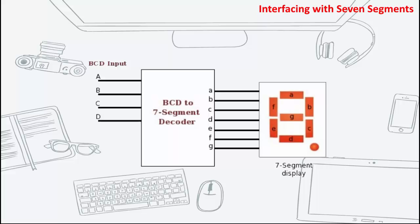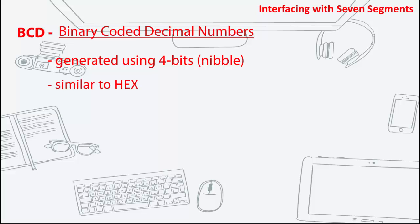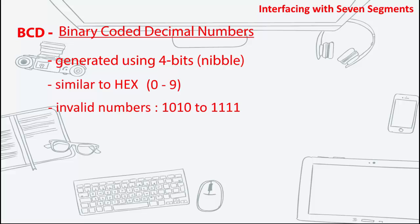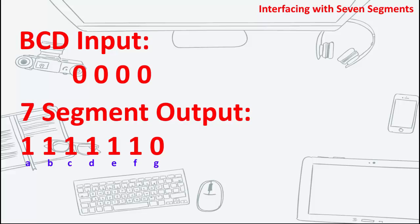Unlike the common anode or common cathode display, the process of displaying characters on a BCD to 7-segment display is different. It uses BCD (binary coded decimal) numbers to display specific numbers. BCD numbers are generated using 4 bits, also known as a nibble. This is similar to hex numbers, with the difference that it can only range from 0 to 9. Binary patterns from 1010 to 1111 are treated as invalid input and are not used. So for a BCD input of 0000, we get a 7-segment output of 1111110, which is the number 0.